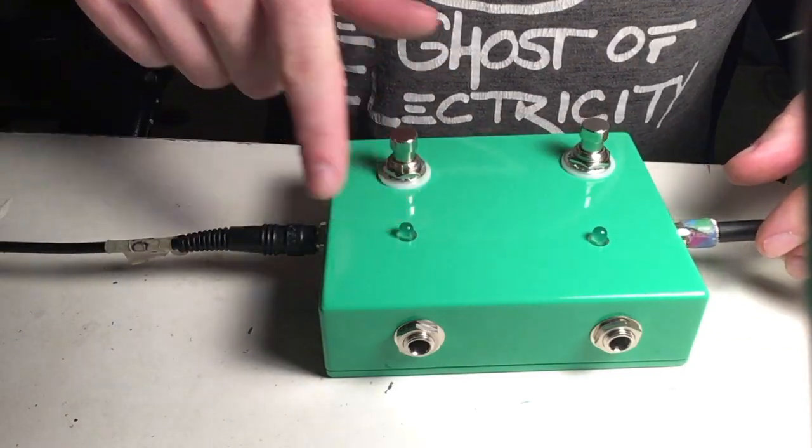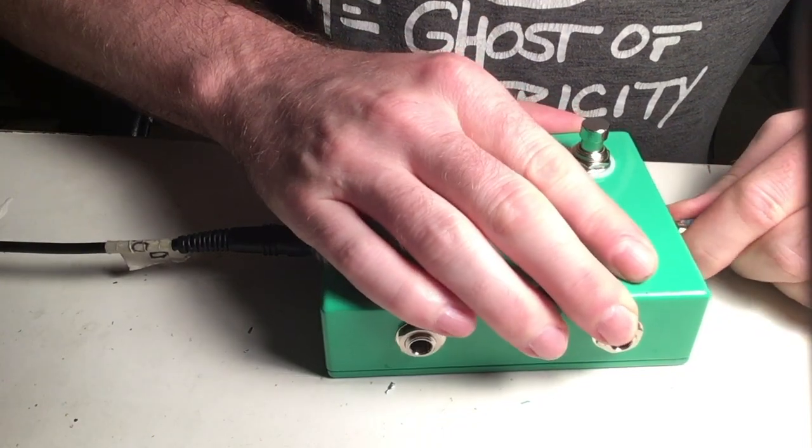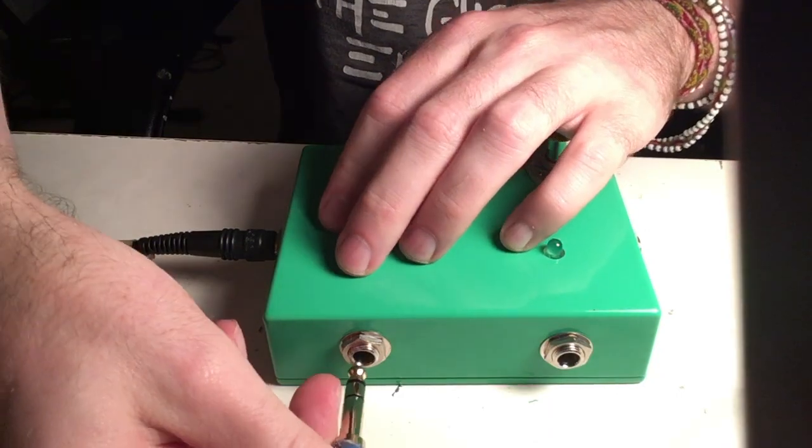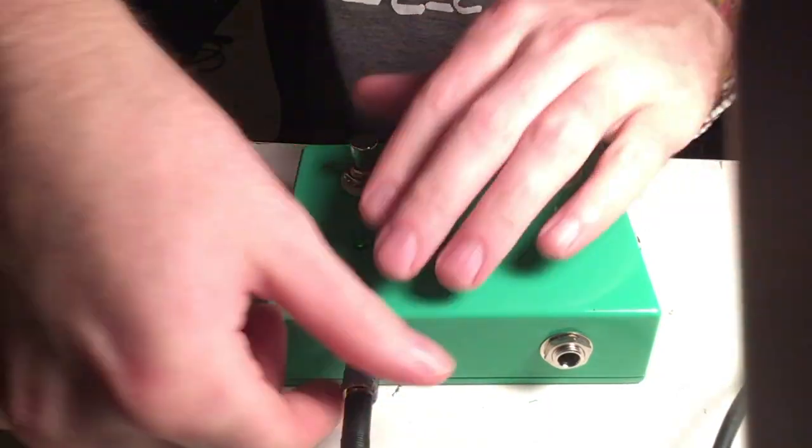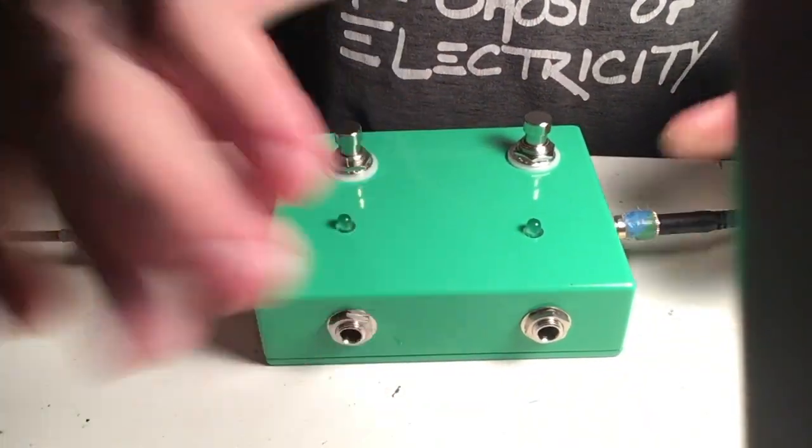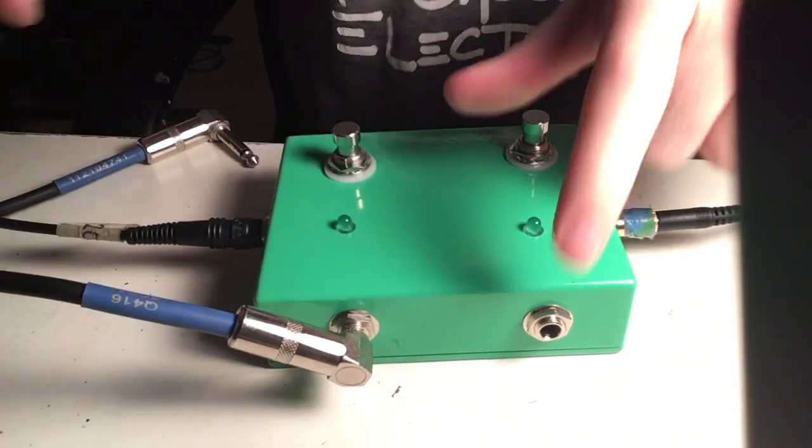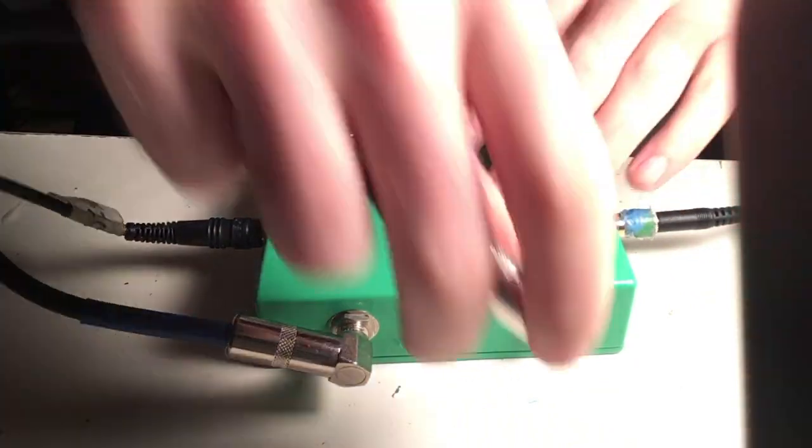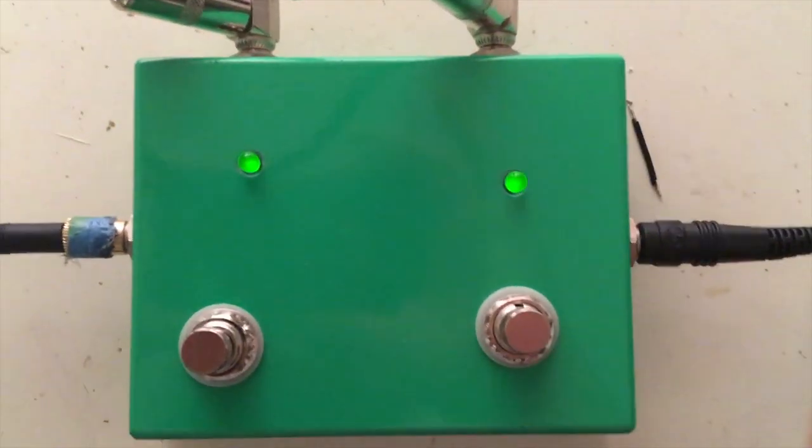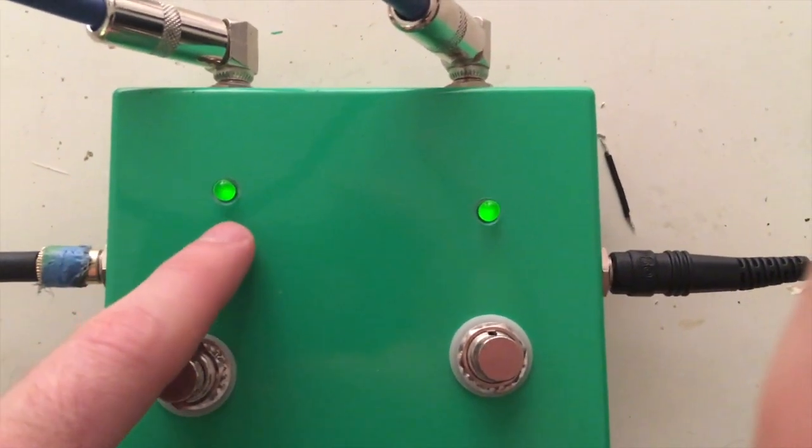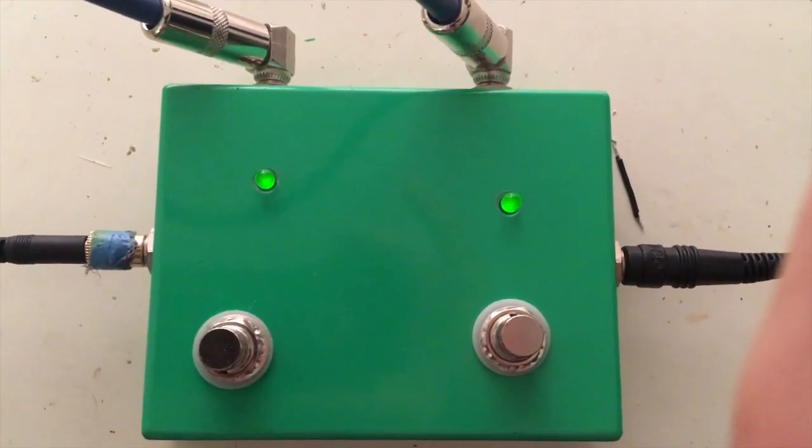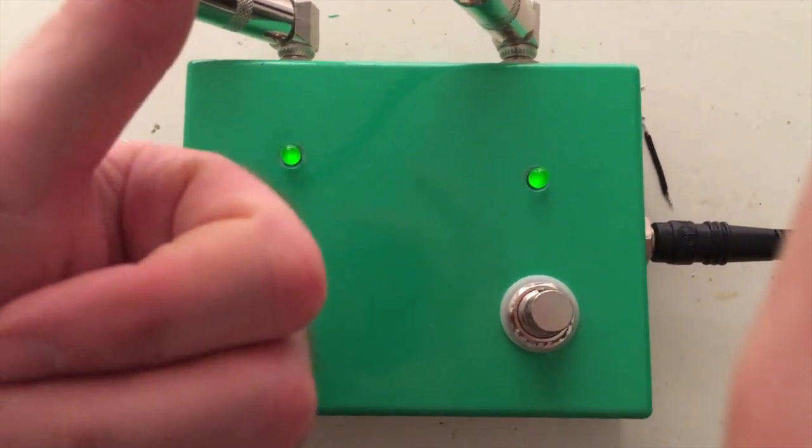So now that the effects loop is engaged, I should be seeing signal out of here. Let's find out. Oh, yeah! All right. Now, we get signal out of here and back into here. Should come out of there. Let's see. It's a little cockeyed. This one's a little, it's a little higher than that one. Just a little, you know, it works.